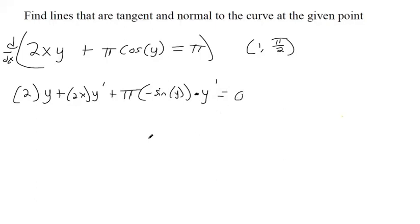Okay, so we've taken a derivative of everything. Now we need to try to get y prime by itself. So I can subtract 2y from both sides because that term doesn't have y prime.